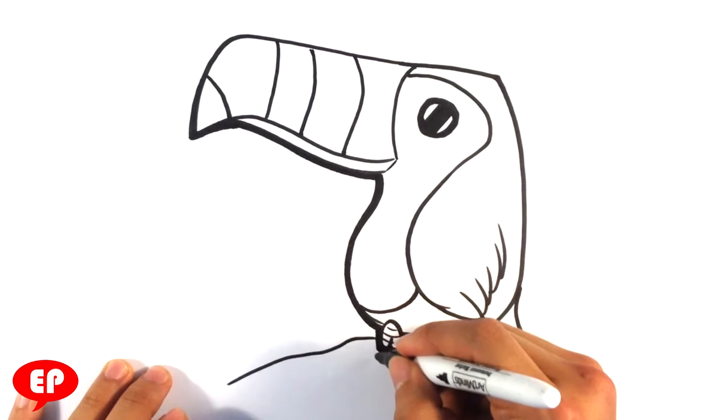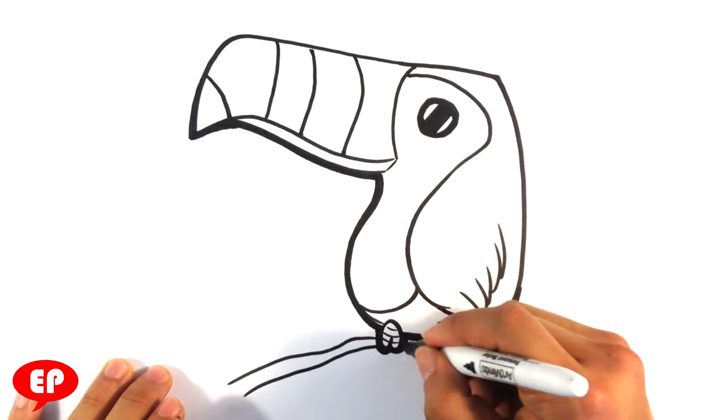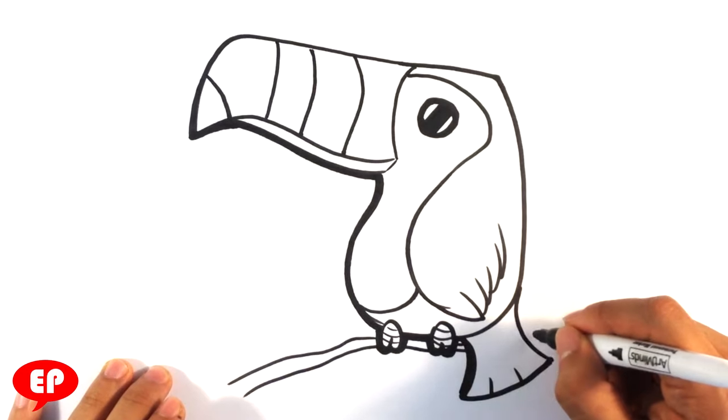If you want, it could be sitting like on a branch. Just so it looks so awkward, like in the air or something.